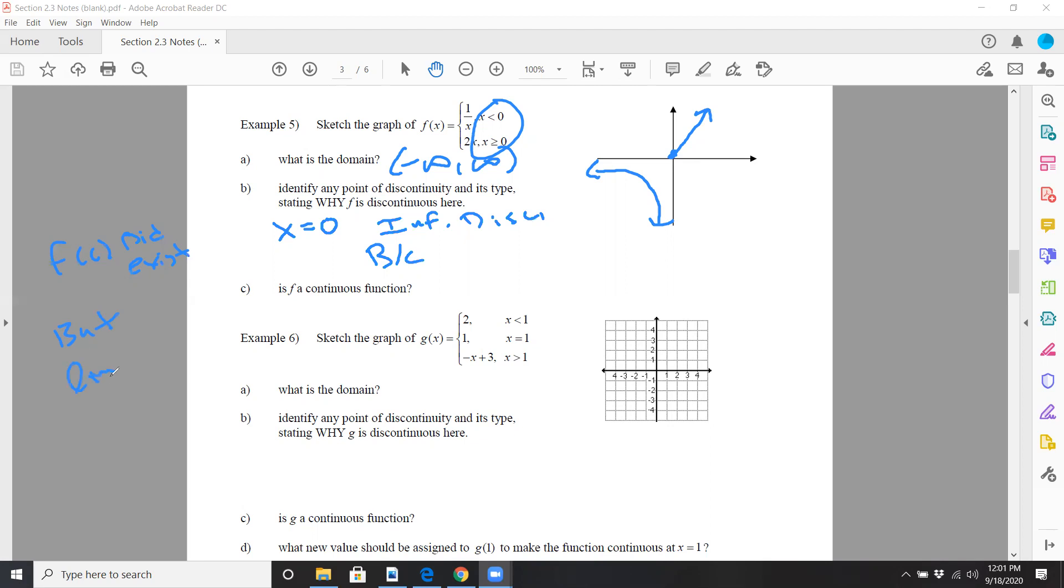The limit as x approaches zero of f of x did not exist, because my left hand limit was negative infinity while my right hand limit was zero. Whenever you have anything that's infinite in nature, that's automatically a vertical asymptote which we call an infinite discontinuity. That's the reason why.